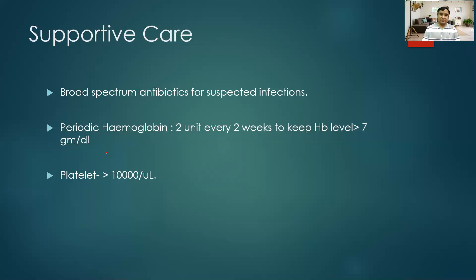In summary: aplastic anemia is a term coined by Paul Ehrlich and is a condition characterized by pancytopenia with bone marrow hypoplasia. It has inherited and acquired causes. The common presentation is bleeding and features of anemia. CBC shows decreased hemoglobin, TLC, and platelets; bone marrow biopsy shows fatty marrow. Treatment of choice is bone marrow transplantation; alternatively, ATG plus cyclosporine combination therapy.